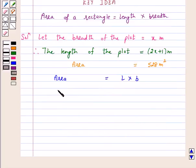Therefore, 528 is equal to length is 2x plus 1 into x. This implies 528 is equal to 2x square plus x.